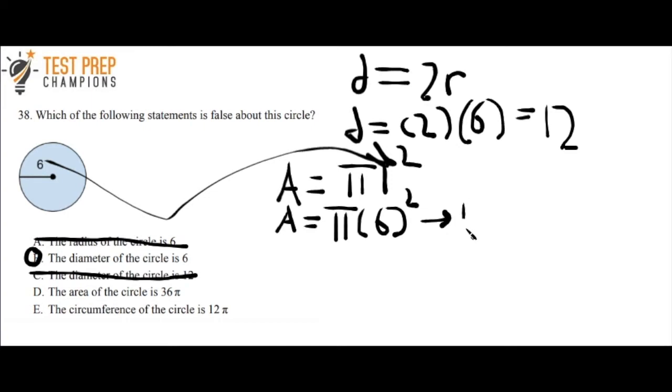So the answer is the area equals π times 36, or 36π is usually how you write it. So that is correct.